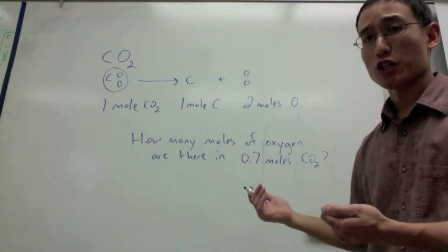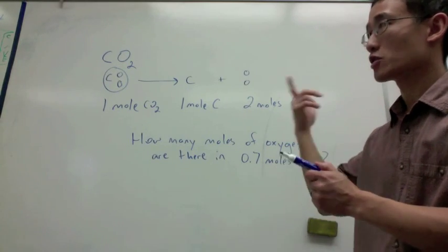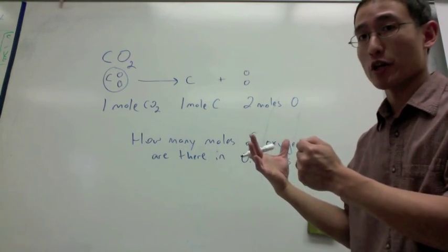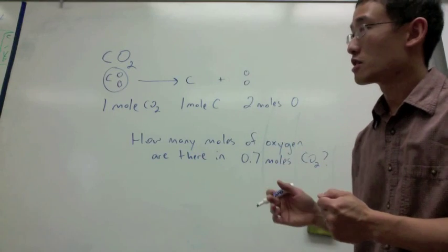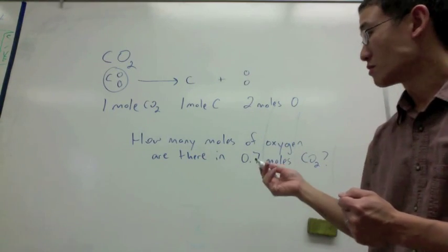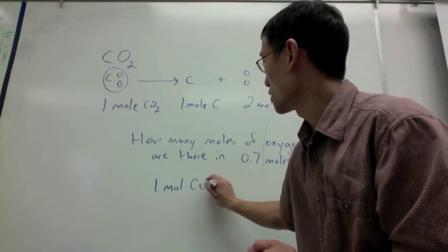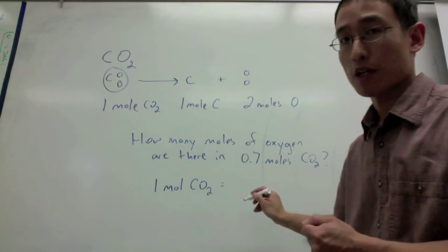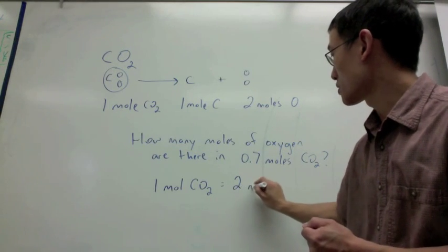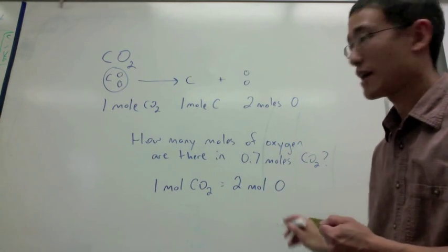I can use a mole ratio like I did with the balanced equation, except now I'm going to write a mole ratio of just a carbon dioxide molecule. So, my mole ratio is, for every mole of CO2, I'm going to have two moles of oxygen.